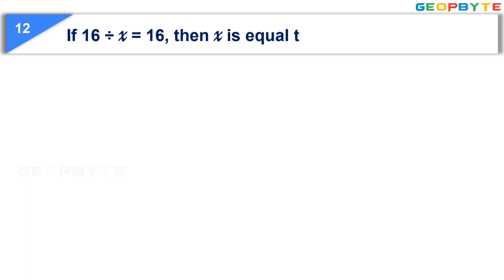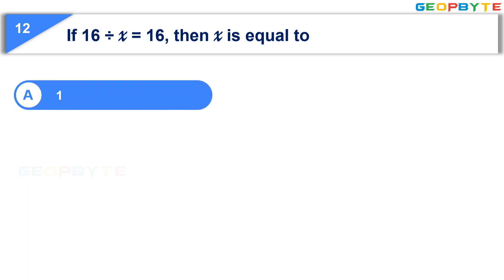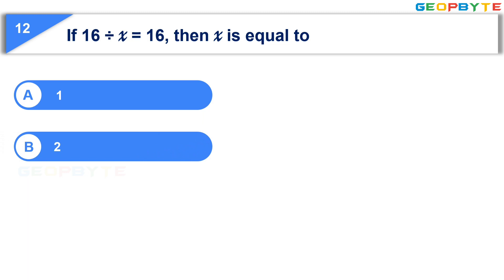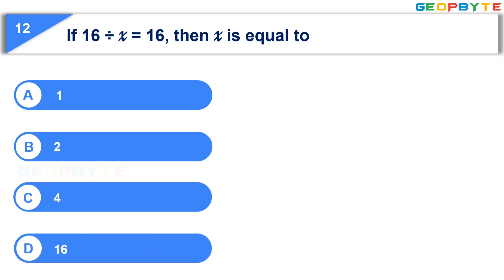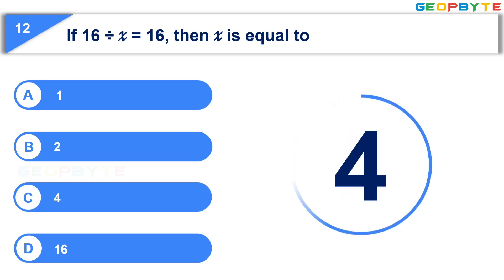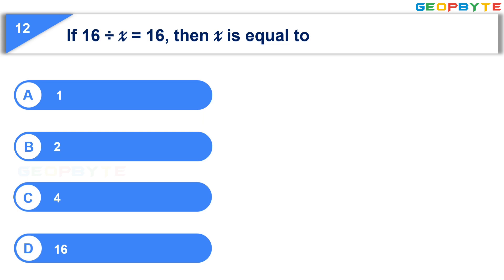The twelfth question: If 16 divided by x is equal to 16, then x is equal to — Option A: 1. Option B: 2. Option C: minus 2. Option D: 16. Your time starts now. Your time is up. And the correct answer is Option A: 1.